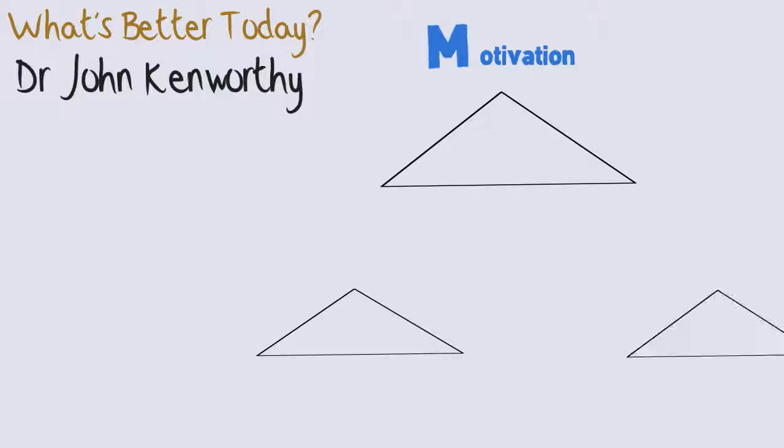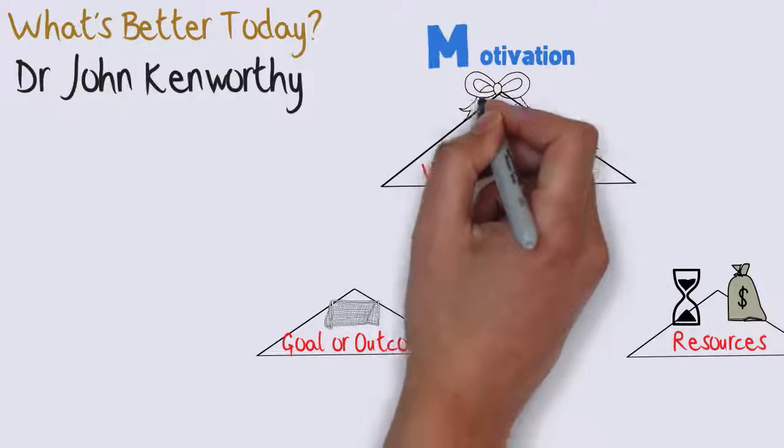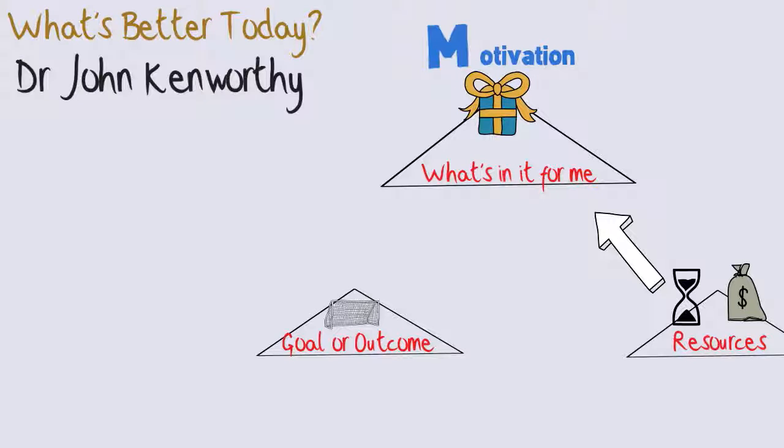M is for motivation. Motivation is something that is generated by the interaction of three aspects of anything we do. We have a goal. We have certain resources, our mind, our body, money, tools, knowledge, skills. And we utilize those resources to satisfy something that we personally value.